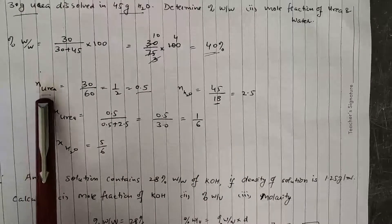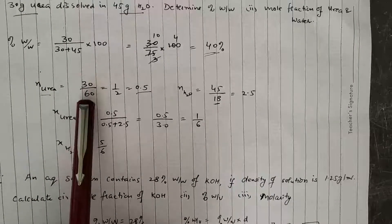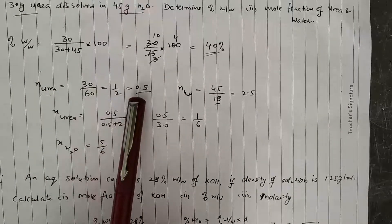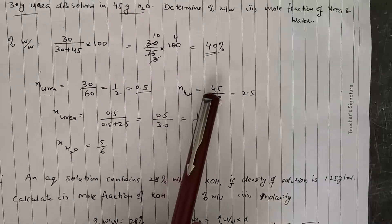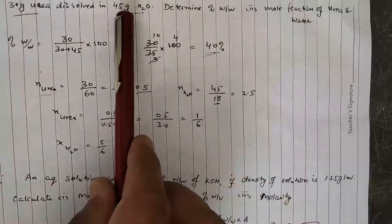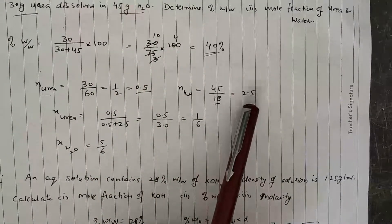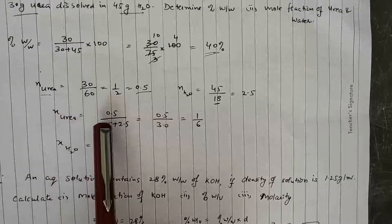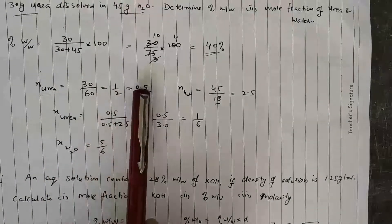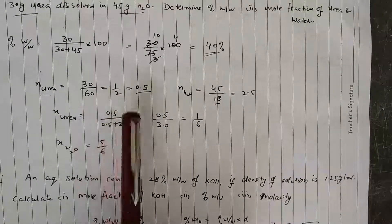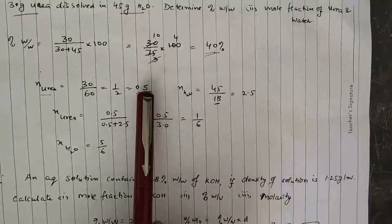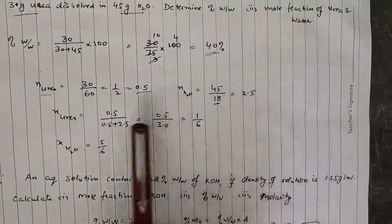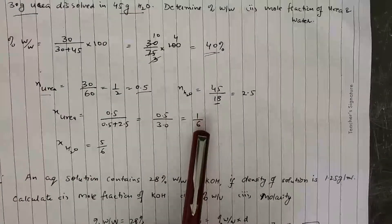Number of moles of urea = 30 / 60 (molar mass of urea) = 0.5. Number of moles of water = 45 / 18 = 2.5. Mole fraction of urea is 0.5 divided by total number of moles, where total moles = 0.5 + 2.5.